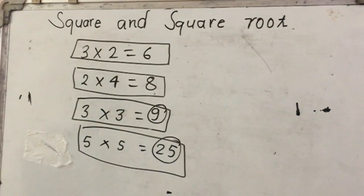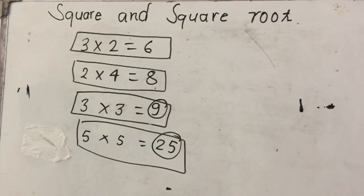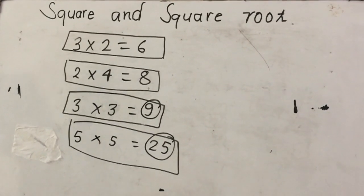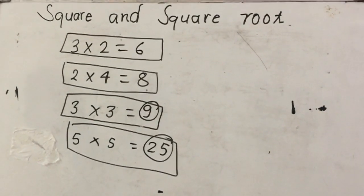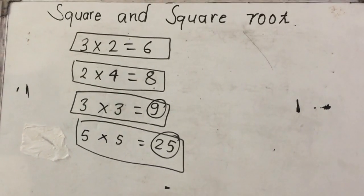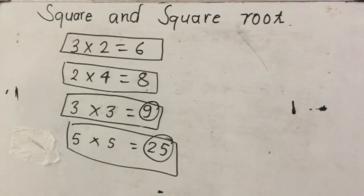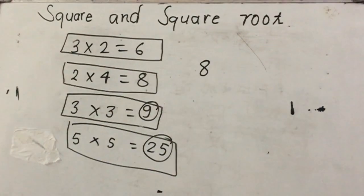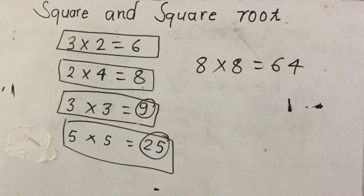So what is a square number? Simply, a square number is the product of two identical numbers. When a number is multiplied by the same number, the product is the square number of that number. Let's take another example: 8 times 8 is 64, so 64 is a square number.